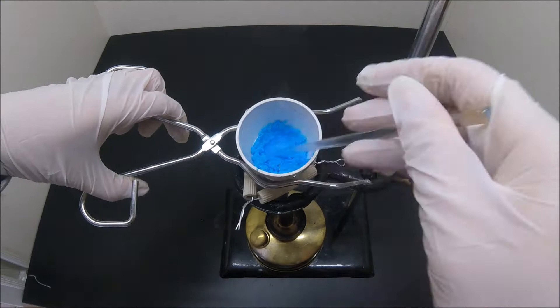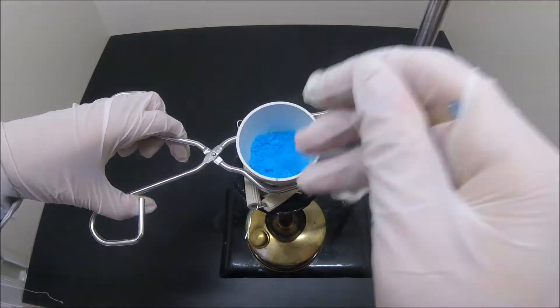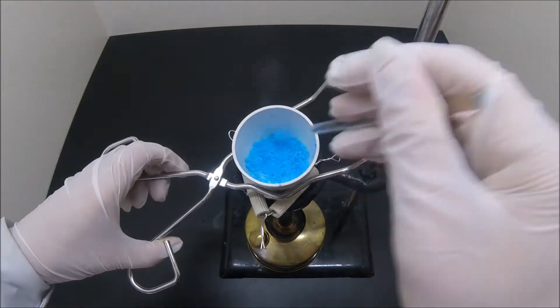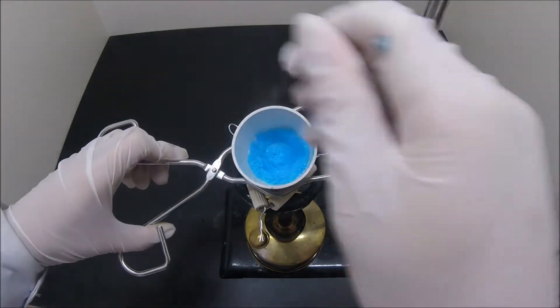As the heating continues, the blue color slowly fades as copper sulfate pentahydrate loses its crystallized water and becomes copper sulfate anhydrous.